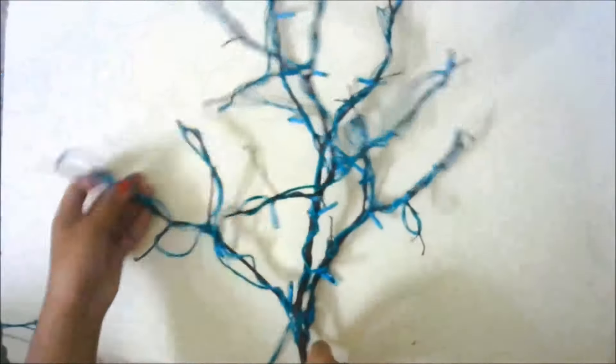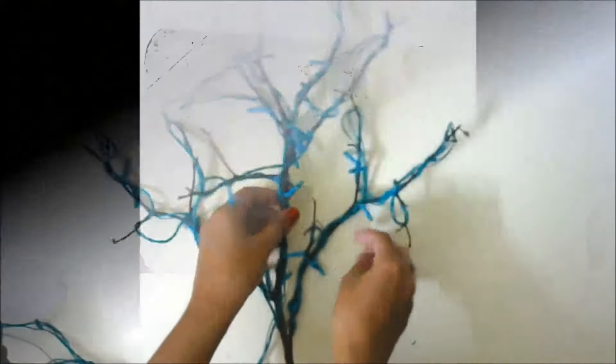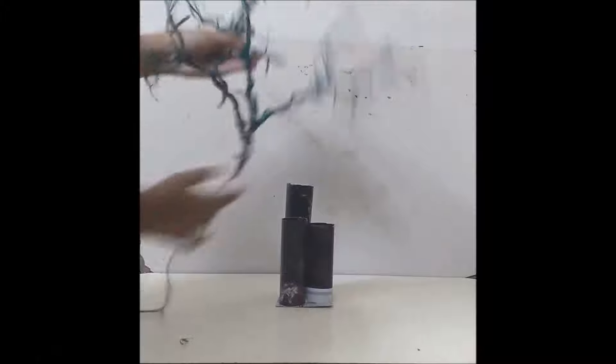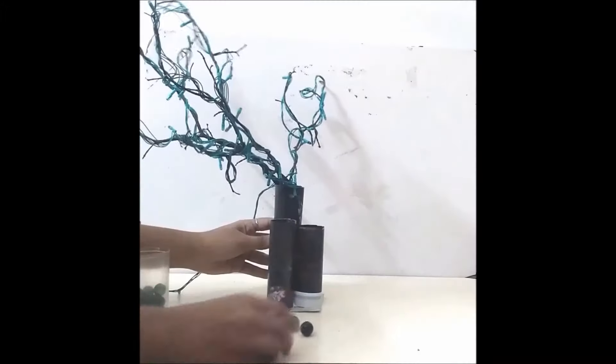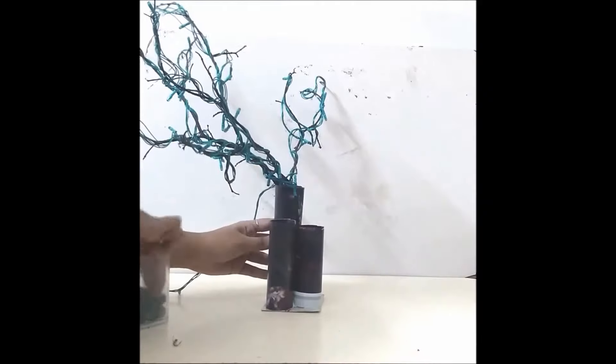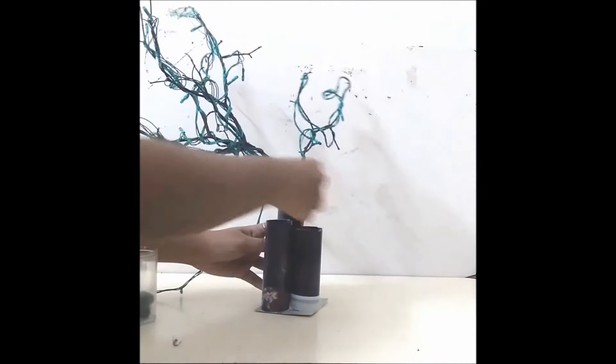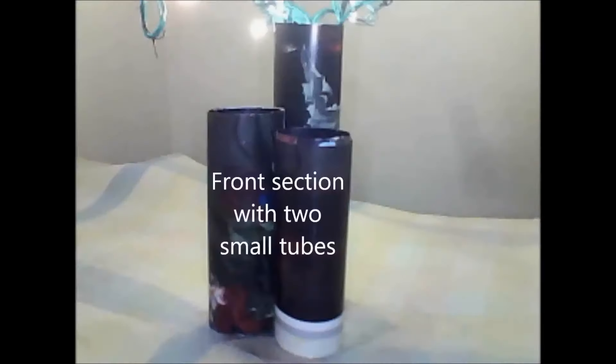So this is how our branch looks like after decorating it with the green lights. When we put the branch into the larger tube of the base it doesn't balance properly, right? To avoid this, let us add some marbles into the front section. That is, for the base we have made two smaller tubes at the front.